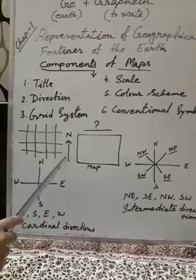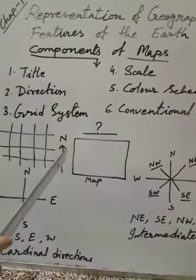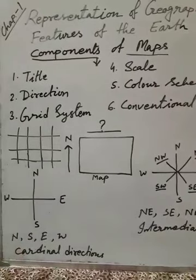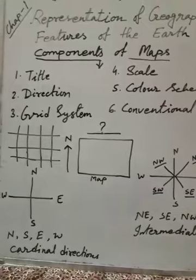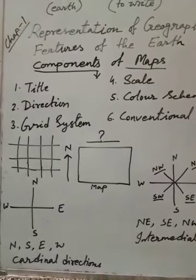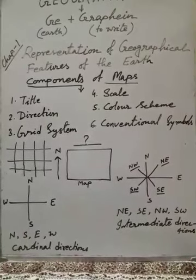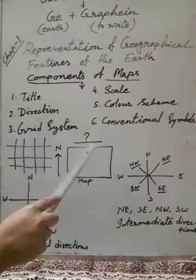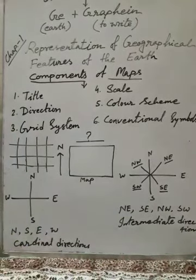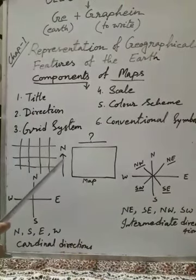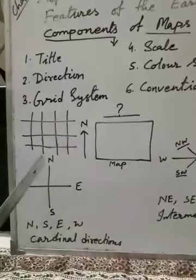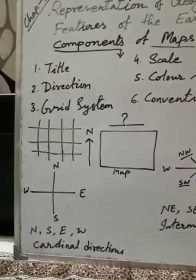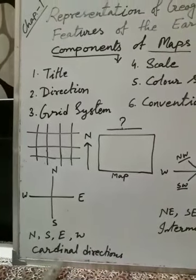I have drawn one arrow here and written N — means the upper part of the map always indicates north. I repeat: upper part of any map always indicates north. So north always comes at the top of your map. If it is north, then downward is south, your right-hand side indicates east, and left-hand side indicates west. North, south, east, west — these are the most important four directions to indicate any location on a map, and these four directions are called cardinal directions.